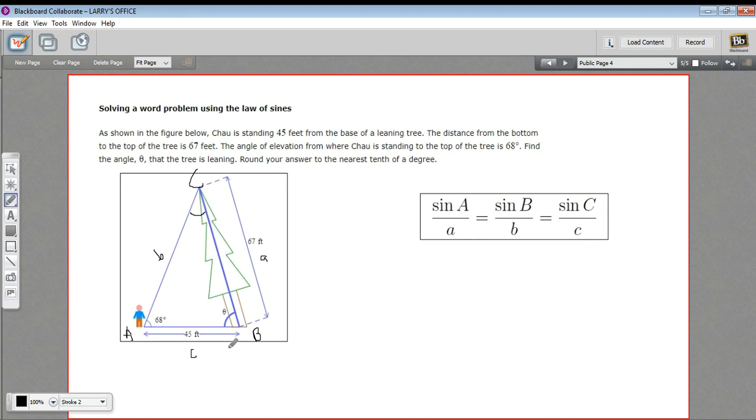Let's set up our law of sines here. So I'm going to start with sine of A over A. So that's the sine of 68 degrees over 67. And we're going to set that equal to sine C over C. We don't know angle C. That's what we're looking for. So I'll just write sine of C. And the side C is 45.